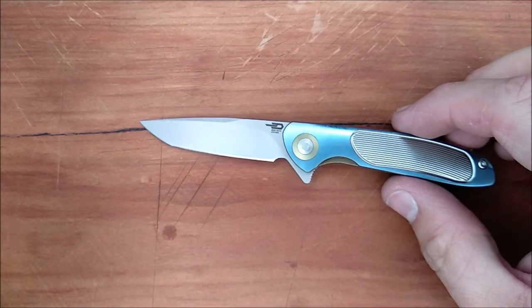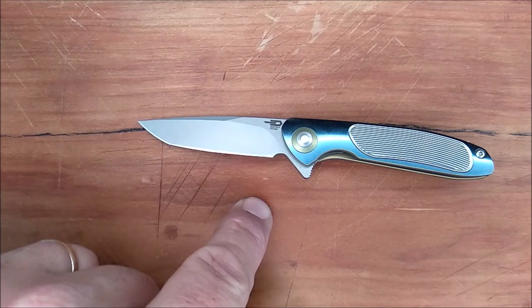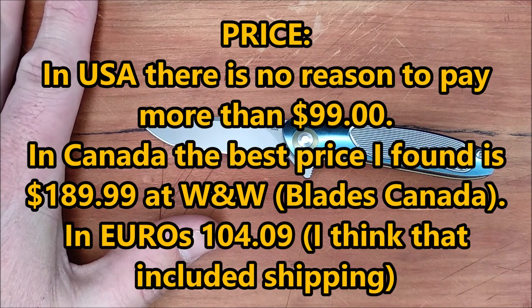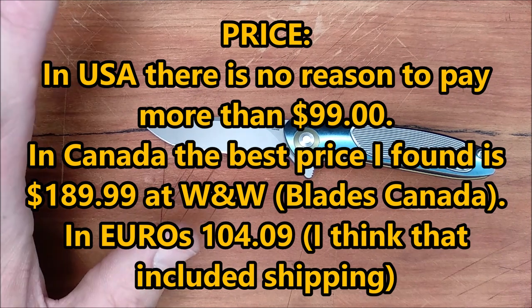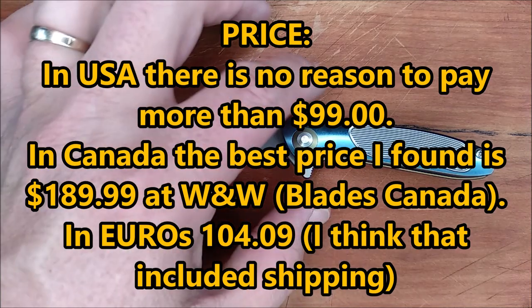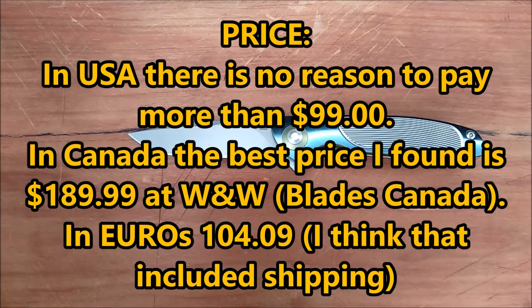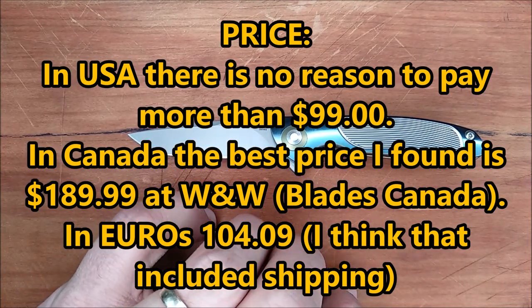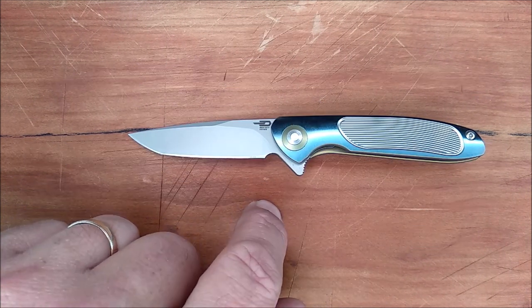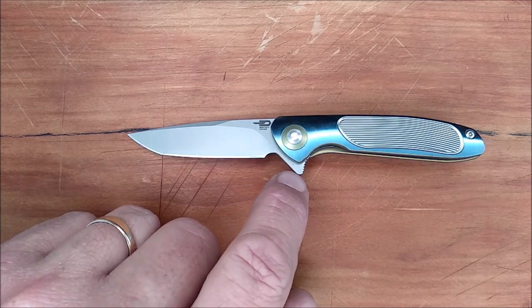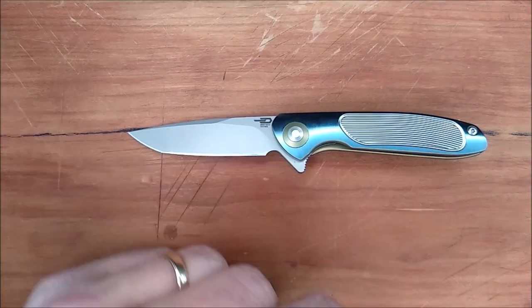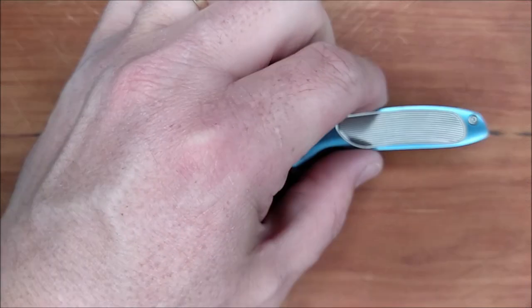How much does this knife cost? Well, right now you can get this knife, the silver or the gold for $99 US at a number of stores in America. In Canada, it's costing $189.99 at Blades Canada, also known as Warriors and Wonders. I didn't see it at any other store in Canada. If there's another store in Canada that has it cheaper, please let me know guys so I can put it down in the description. I've got links down below to make it easier for you to buy it.